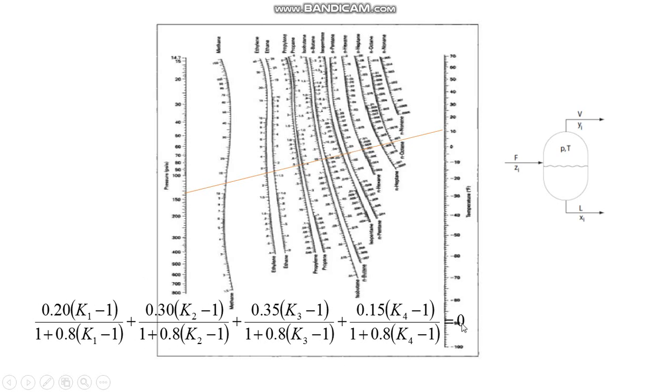If it is not 0, I will draw another line and I will find out K1 for ethane, K2 for propane, K3 for isobutane, and K4 for n-butane. I will substitute them K1, K2, K3, K4 here. If it is 0, great. Otherwise, I will go to the next guess.